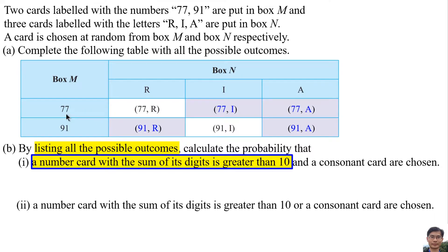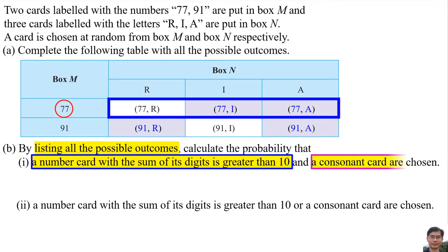Greater than 10 means 77. There are 3 possible outcomes that the number cards are 77. A consonant card are chosen. The only consonant card in the box N is R. There are 2 possible outcomes that the letter cards are R.